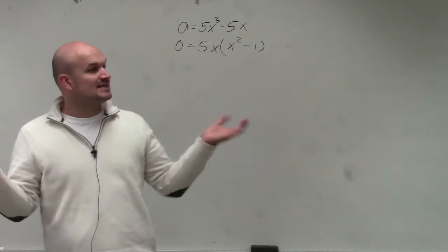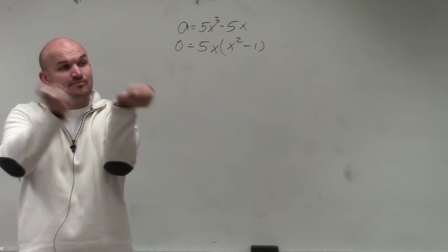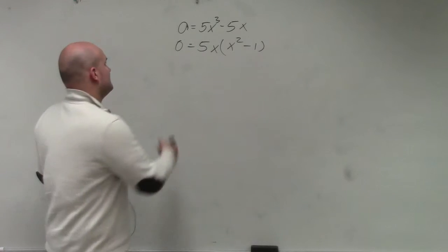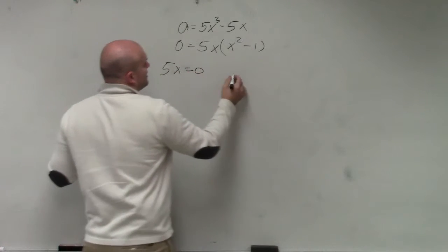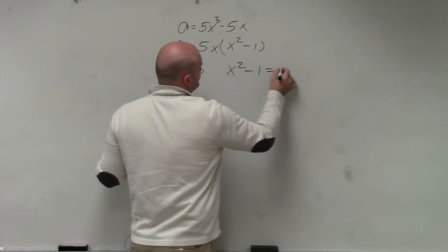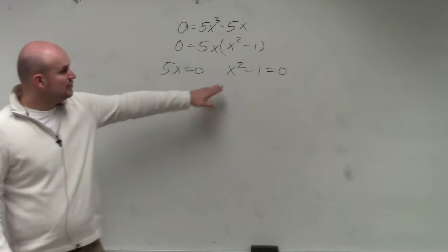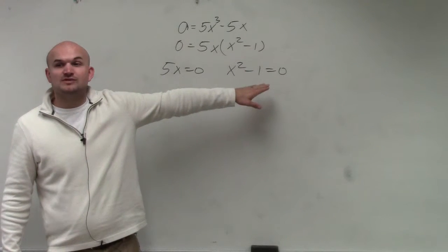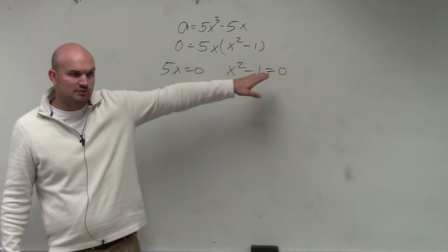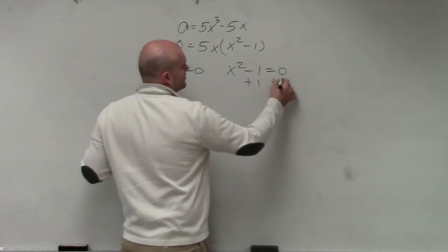Now I can go ahead and now I have my polynomial written as a product of two factors. So therefore, I can use the 0 product property to set them both equal to 0. Now I can go ahead and solve for x. You could factor this further as x minus 1, x plus 1, which is the difference of two squares, or you could just solve that using the 0 product property.